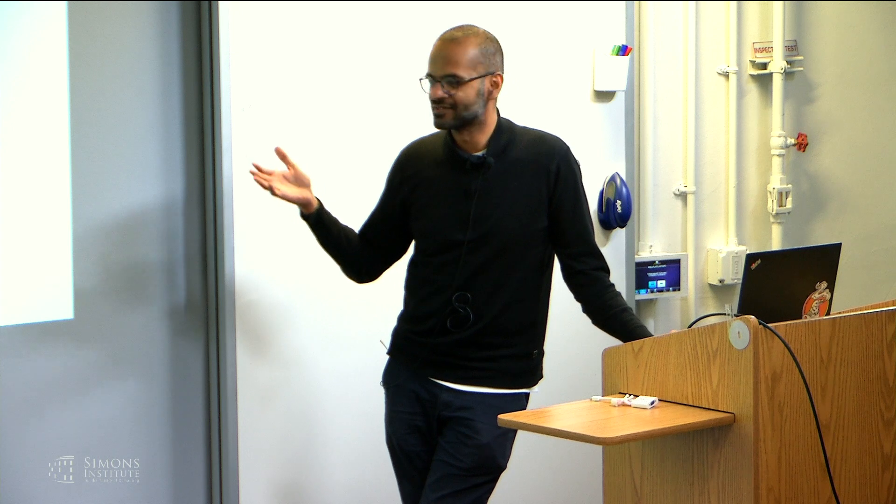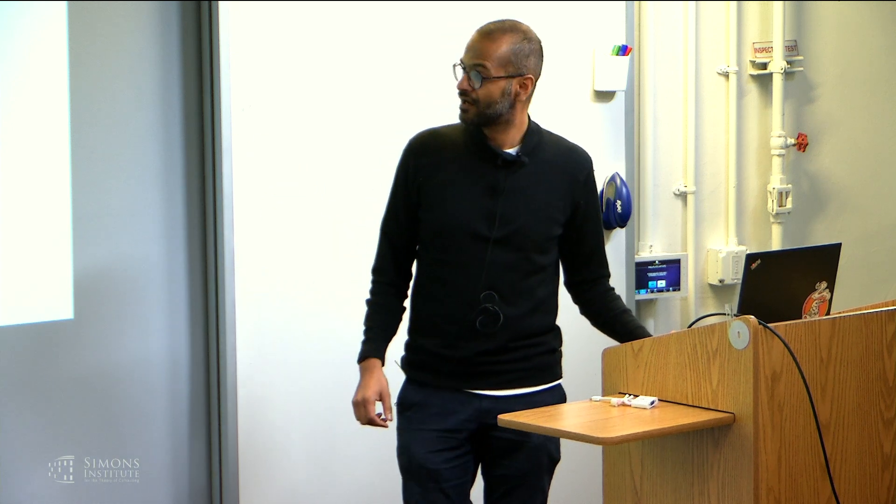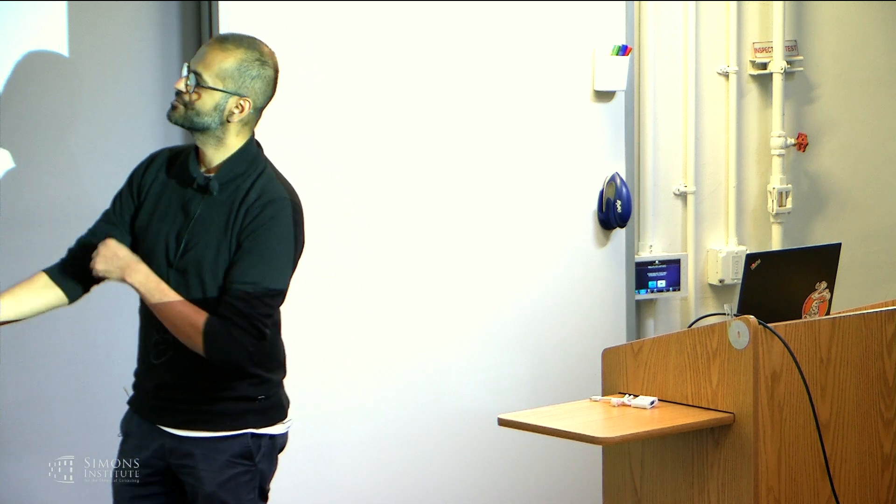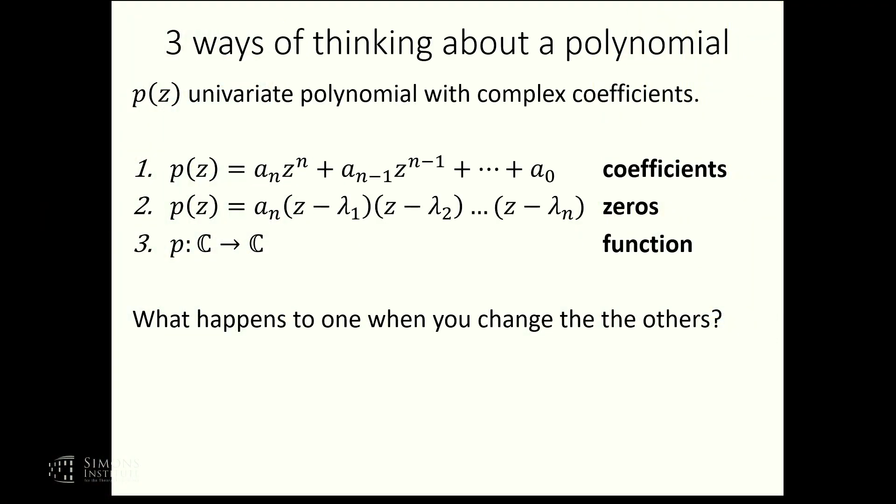Maybe the most concrete way to tell you what the themes of this field are is to just study the simplest example. So let's suppose I have a univariate polynomial p with complex coefficients and degree n. There are three different ways of thinking about this polynomial. So maybe the most concrete one is just to list the coefficients. You have these n plus 1 numbers that are the coefficients.